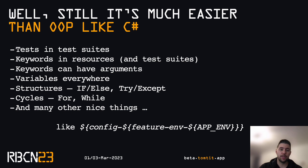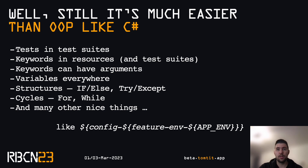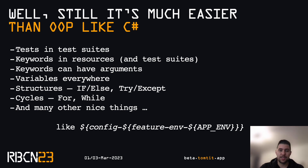It's much easier than using OOP languages like C-sharp or Java, right? Similar to those languages, we have tests — in test suites though. We have keywords instead of methods; they are in resources, and sometimes in test suites too, like private keywords. Keywords can have arguments. We have variables everywhere — luckily only three types. We have structures, if-else, try-accept, so some common ground there. We have cycles, for-cycles, while, and many other things. For example, variable inside variable inside variable — that's really useful when testing multiple environments in a generic way. But this is still a lot of coding.